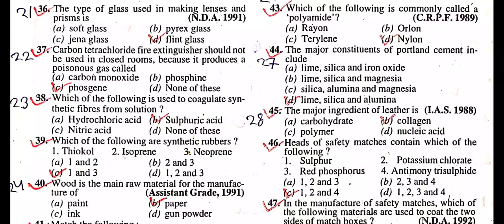Hello everyone, welcome to Vipin Academy. Question: The type of glass used in making lenses and prisms is? Answer is flint glass.